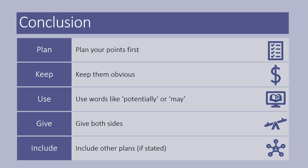Plan your points first. Identify the issue. Identify what the plan or solution is and plan what you need to know — advantages, disadvantages — and keep them obvious. Use words like 'potentially' or 'may'. You must remember to give both sides and include other plans if stated. Go away and practice these responses. These are only the examples I've been able to find, but as the new syllabus gets rolled out, there'll be more questions. I advise all of you to practice these questions, as they could come up on both the current syllabus and in preparation for the new syllabus. Thank you for watching.